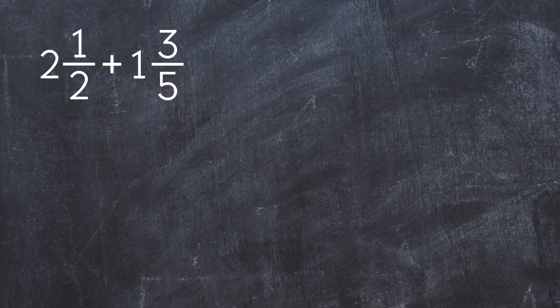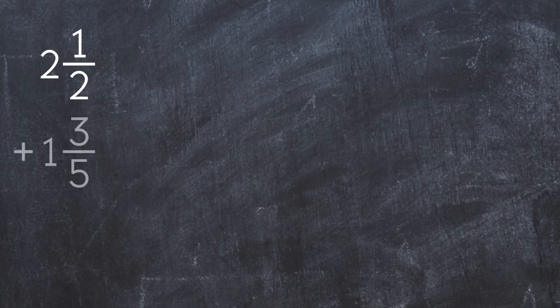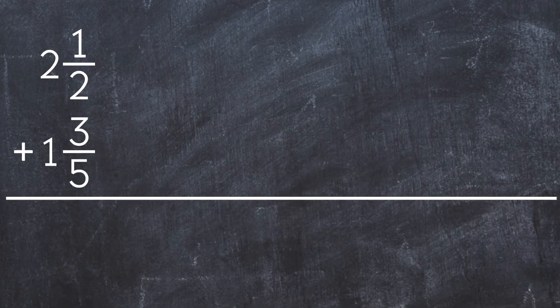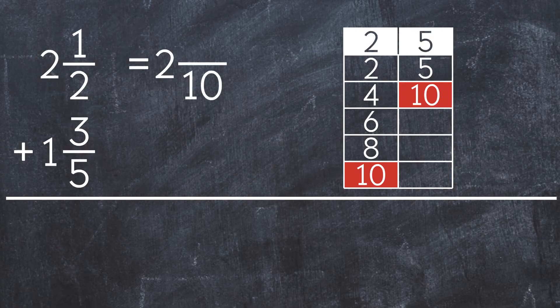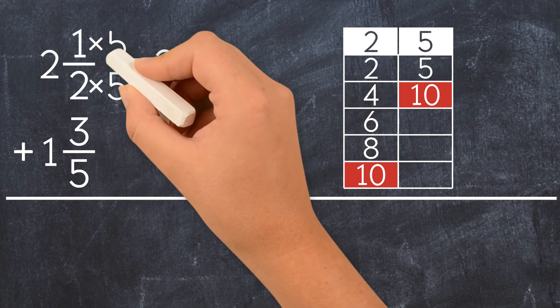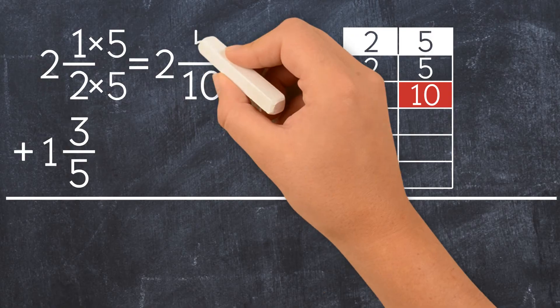Let's do another example: 2 and 1 half plus 1 and 3 fifths. Let's set this problem vertically. First, we need to find the common denominator. The common denominator between 2 and 5 is 10. Let's rename the first mixed number. To get 10 in the denominator, we have to multiply 2 by 5. We also have to multiply the numerator by 5 to get 2 and 5 tenths.